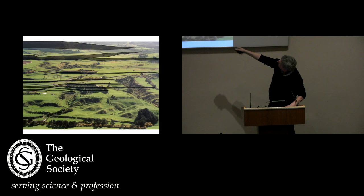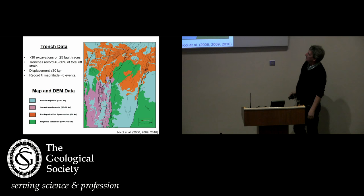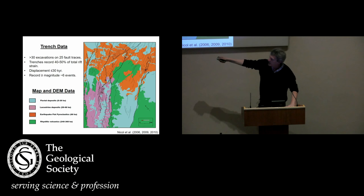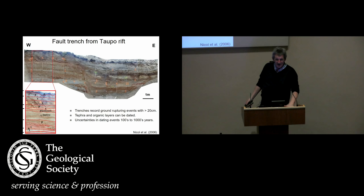These are really subtle faults — you can map them from digital elevation models. We can actually then trench them, cut trenches across them. We've produced a fault map with different layers of different ages: fluvial deposits between 0 and 20,000 years, coastline deposits in pink between 20,000 and 60,000 years, Earthquake Flat as a 60,000-year surface, and rhyolite volcanics up to a quarter million years. So we've got really good data on the long timescale, but it's even better on the short. This trench doesn't look very promising, but in the hands of the right expert, even I began to recognise the different tuffs.